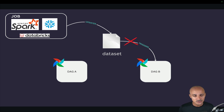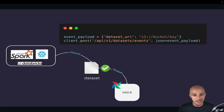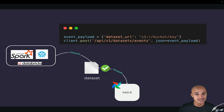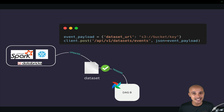So how can you overcome this limitation? In Airflow 2.9, you have a way to tell Airflow that a dataset has been updated by sending a POST request to a dedicated API endpoint with your dataset as the content of the request. Now your Databricks job updates a dataset — a file — and then sends a POST request to Airflow indicating that this dataset has been updated, which triggers DAG B. Just like that, you can trigger data pipelines based on data updates even if those updates come from external tools.